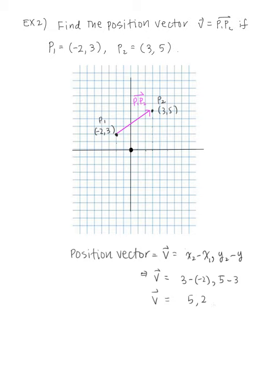We can rewrite this in vector notation as the bracket 5 comma 2 — same thing as an ordered pair. Plotting 5 comma 2, this position vector is parallel to our P1 P2, and I'll denote that vector by V.